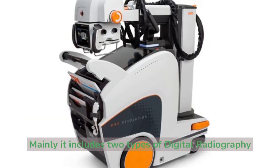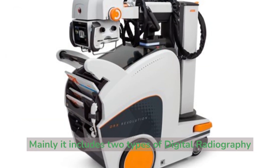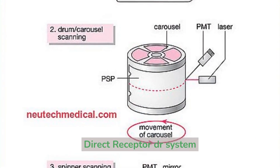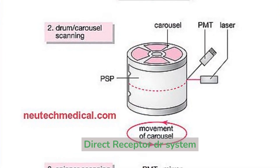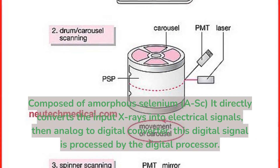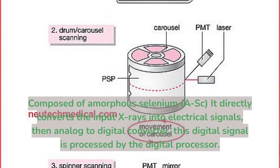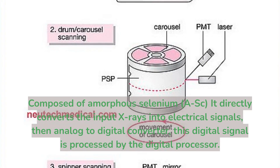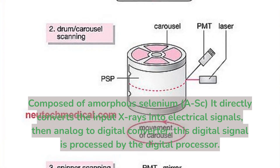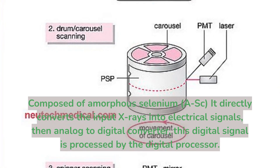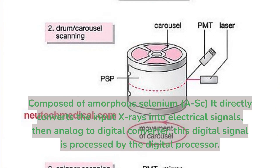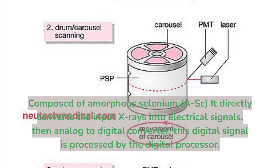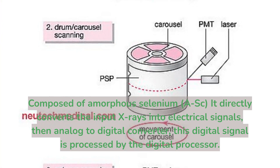There are mainly two types of digital radiography. Direct receptor DR system: composed of amorphous selenium (ASe), it directly converts the input x-rays into electrical signals. Then the analog-to-digital converter passes this signal to be processed by the digital processor.